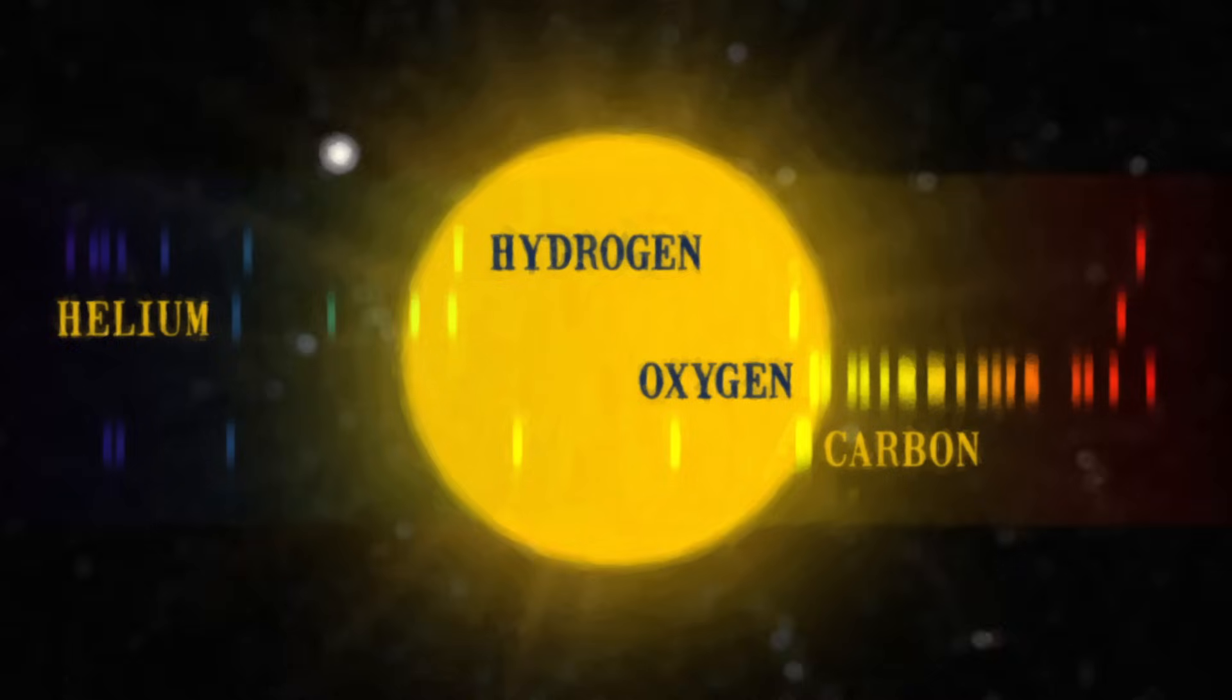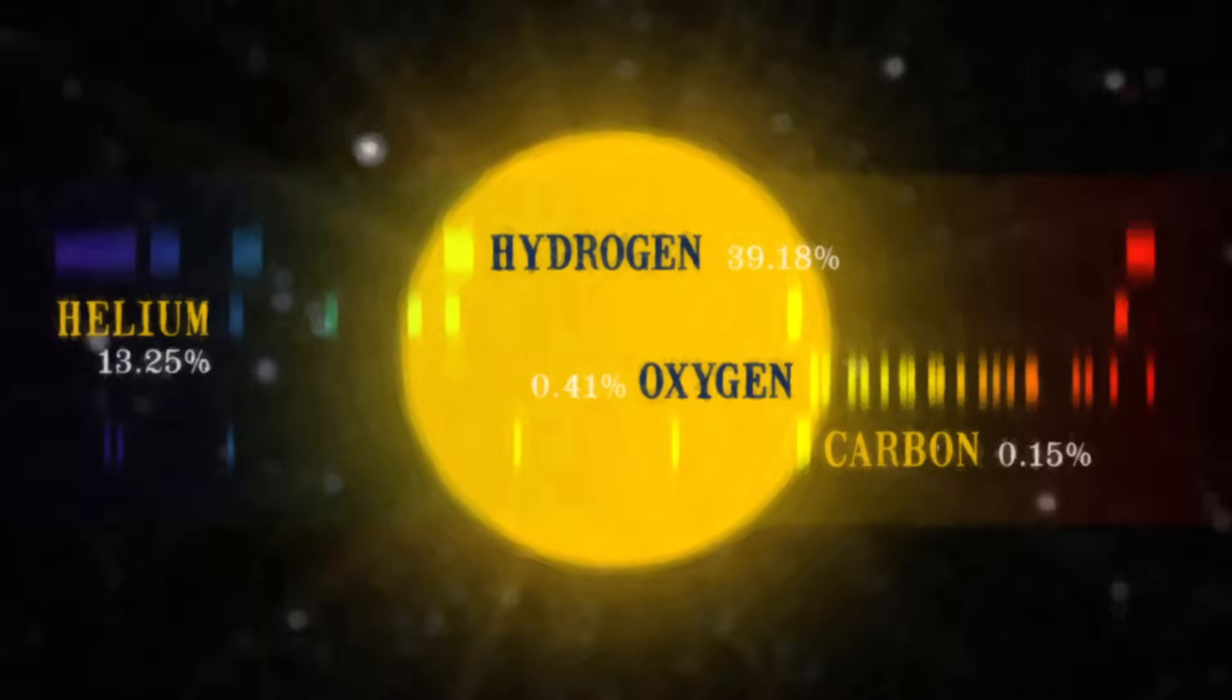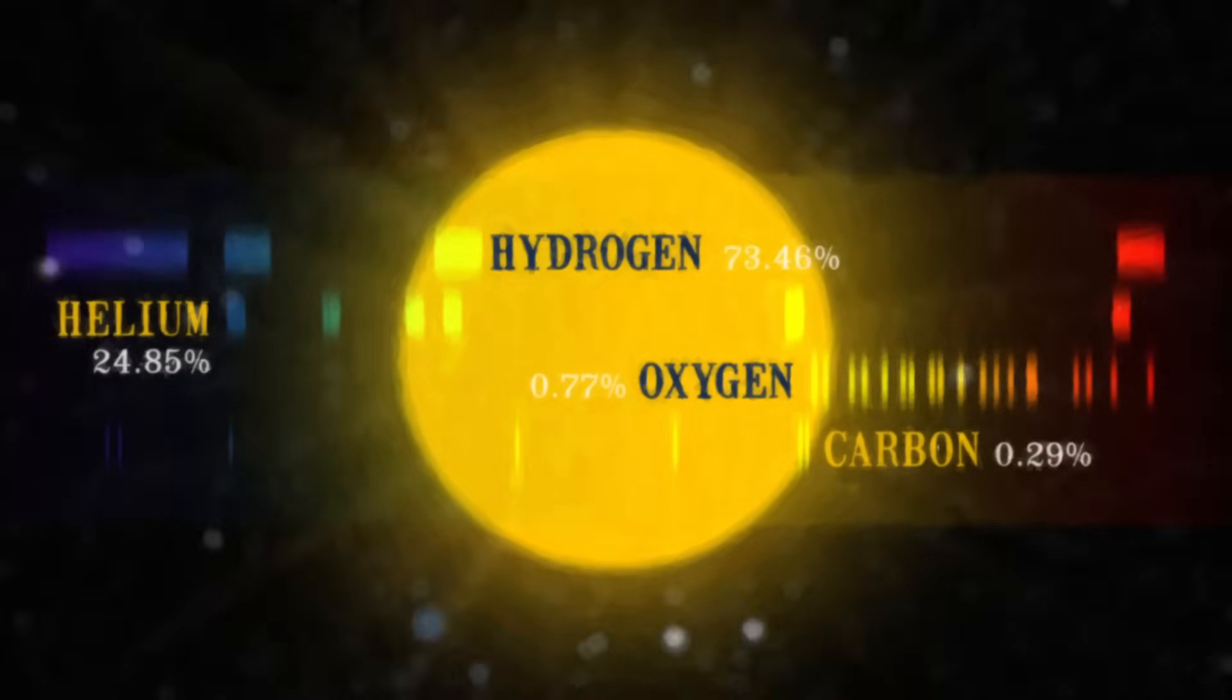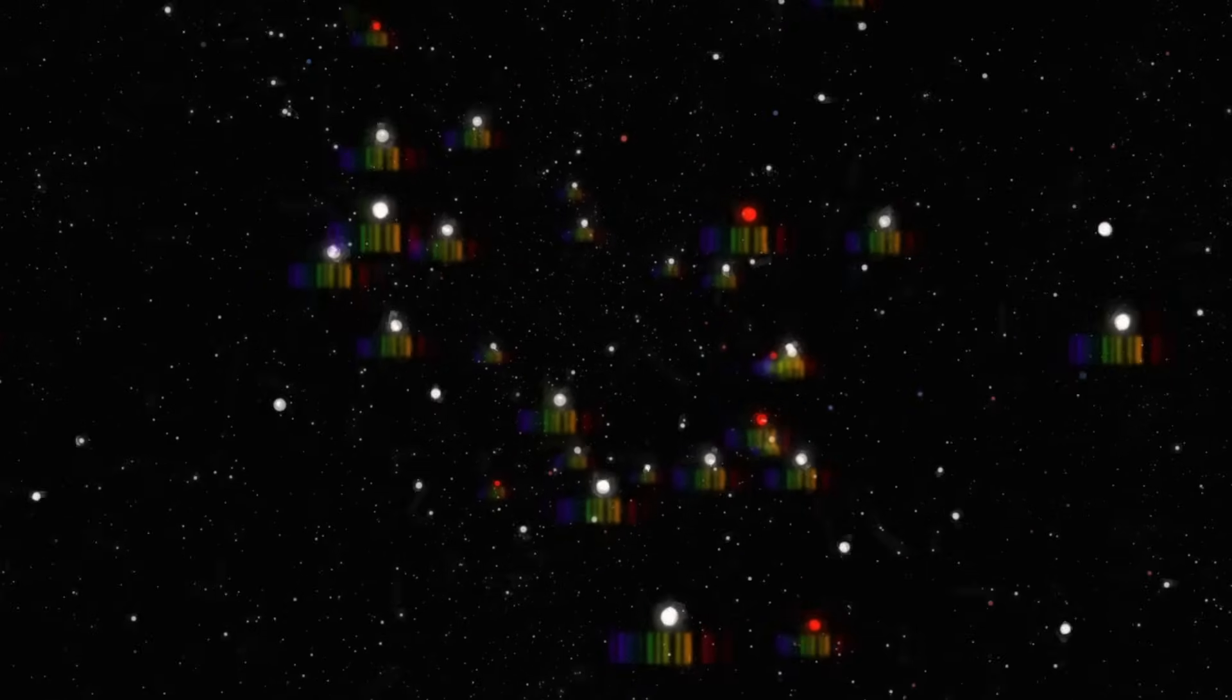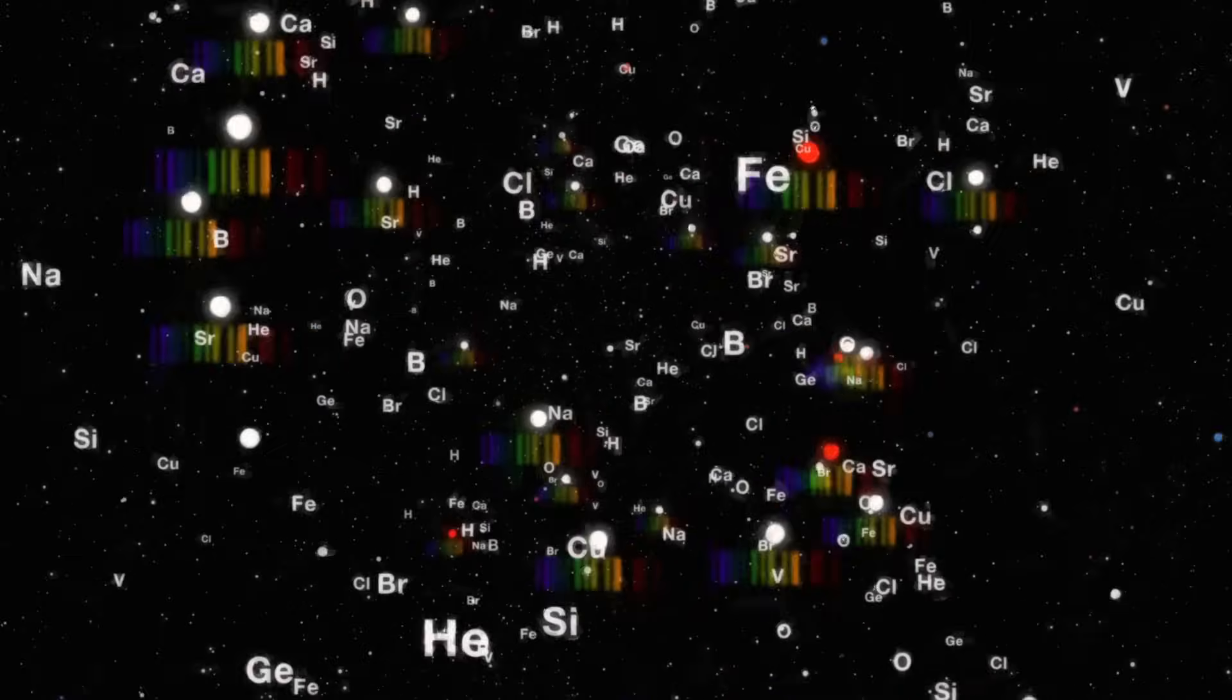So by observing how much light is missing at these characteristic wavelengths, we can tell not only what elements are in the sun's atmosphere, but even their concentrations. And the same idea can be applied to study other stars. Make a spectral rainbow, see what's missing, and figure out which elements are present. Bingo! Now you know what stars are made of.